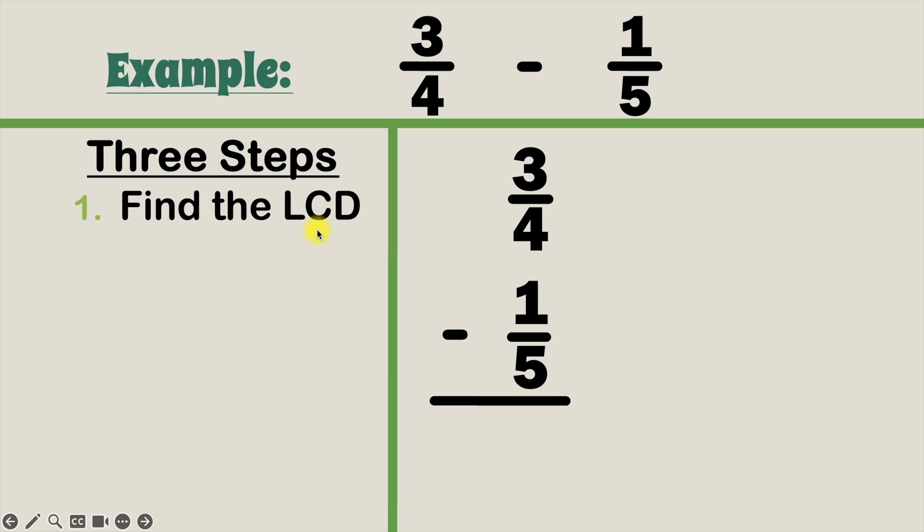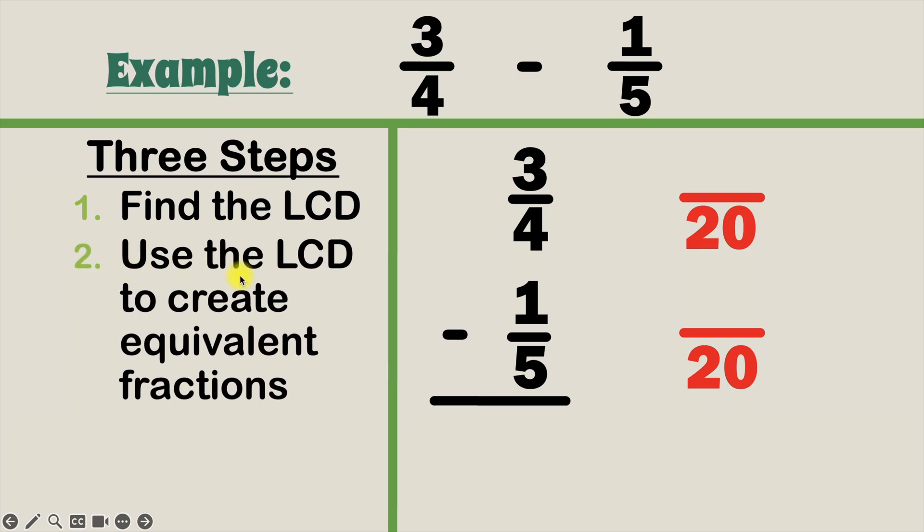Step number one is to find the LCD, and the LCD is the least common denominator. For the fractions we have, in this fraction 3 over 4 the denominator is 4, and in this fraction here 1 over 5 the denominator is 5. The LCD is the least common multiple for those denominators. So what is the least common multiple for 4 and 5? Well that would be 20.